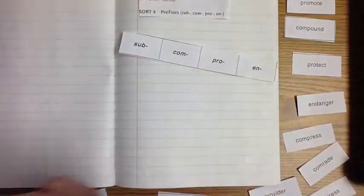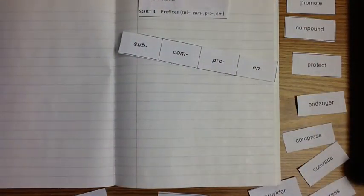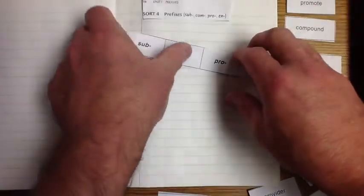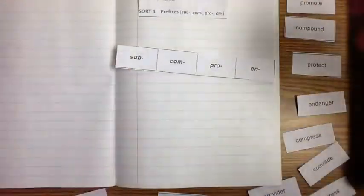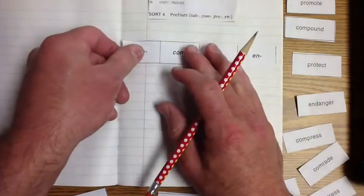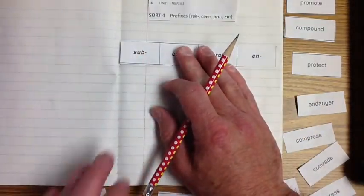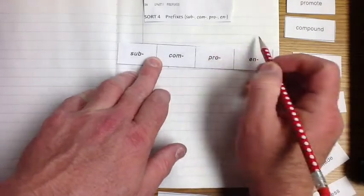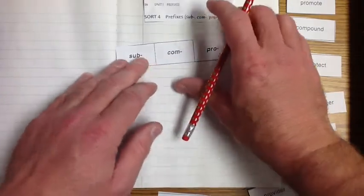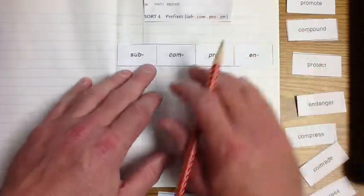So let's get our special spelling glue. And we'll put a little glue across there and we'll put that up on the top here. So we've got prefixes: sub, com, pro, e, n.